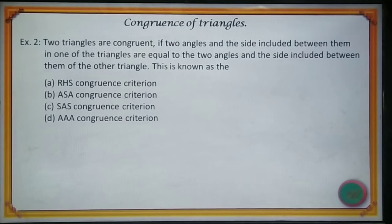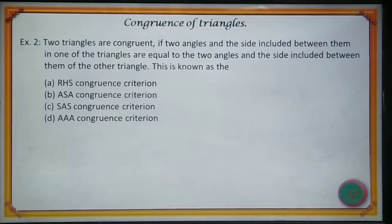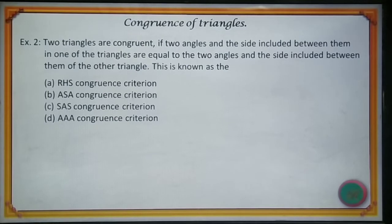Example 2. Two triangles are congruent if two angles and the side included between them in one triangle are equal to the two angles and the side included between them of the other triangle. This is known as: A. RHS congruence criterion, B. ASA congruence criterion, C. SAS congruence criterion, D. AA congruence criterion. Since two angles and the side included between them is given, the correct option is B.